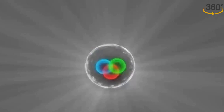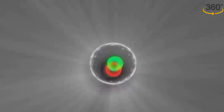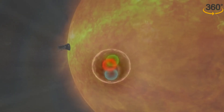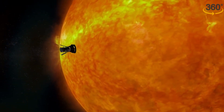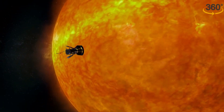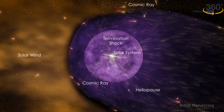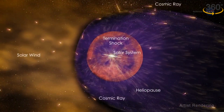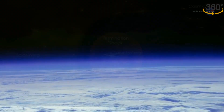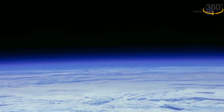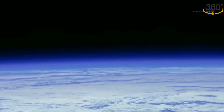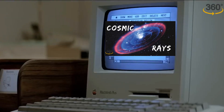Neutrinos are created in many different processes in the universe, like nuclear reactions in the sun and supernova explosions, and in the collision of cosmic rays with the atoms in the Earth's atmosphere. If you want to learn more about cosmic rays, be sure to check out my previous video on the topic.